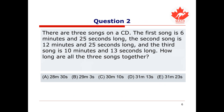Let's look at the second question. There are 3 songs on a CD. The first song is 6 minutes and 25 seconds long. The second song is 12 minutes and 25 seconds long. And the third song is 10 minutes and 13 seconds long. How long are all 3 songs together? Pause this video and try working it out yourself, and when you're ready, keep watching to see how it's done.